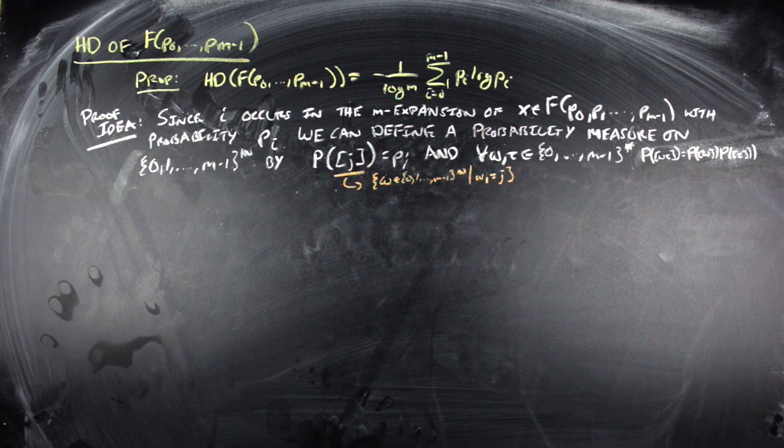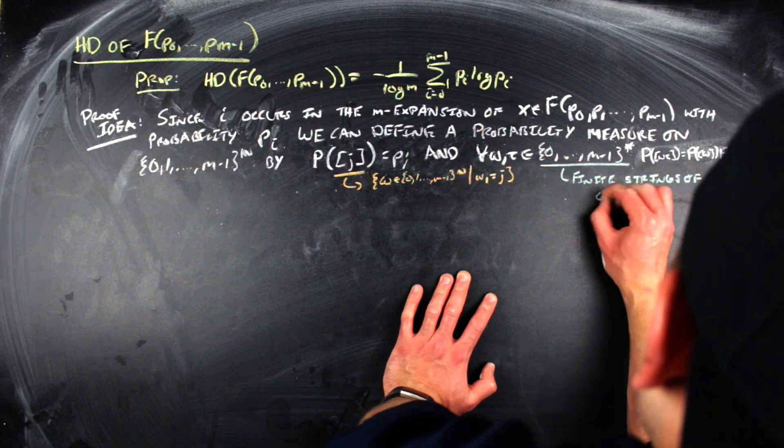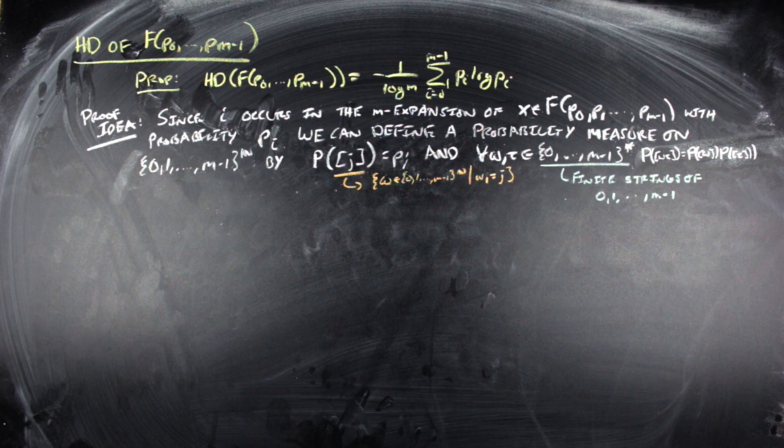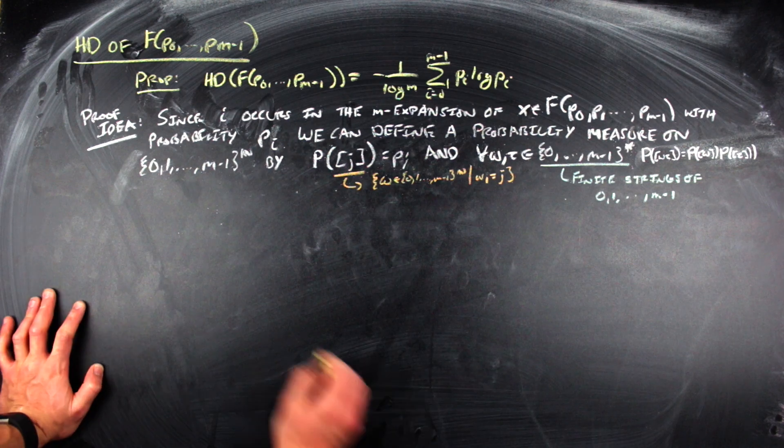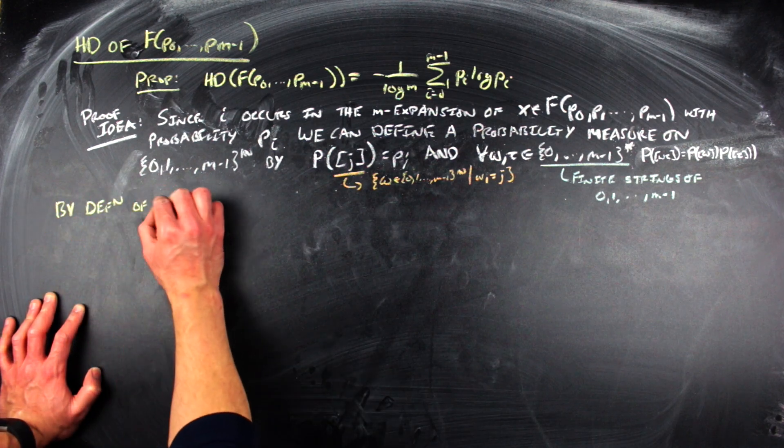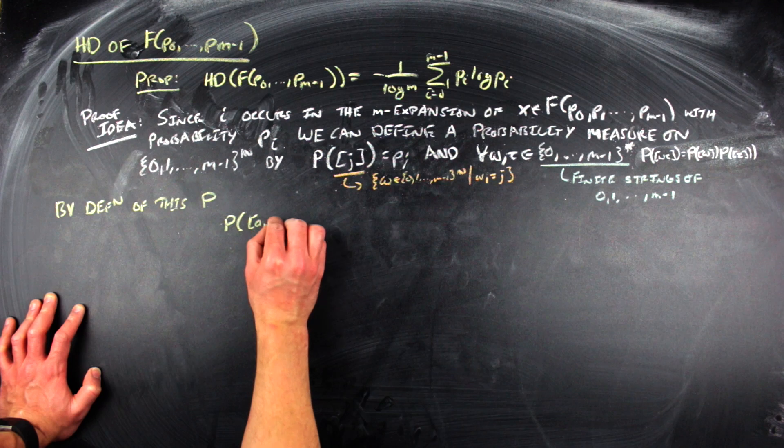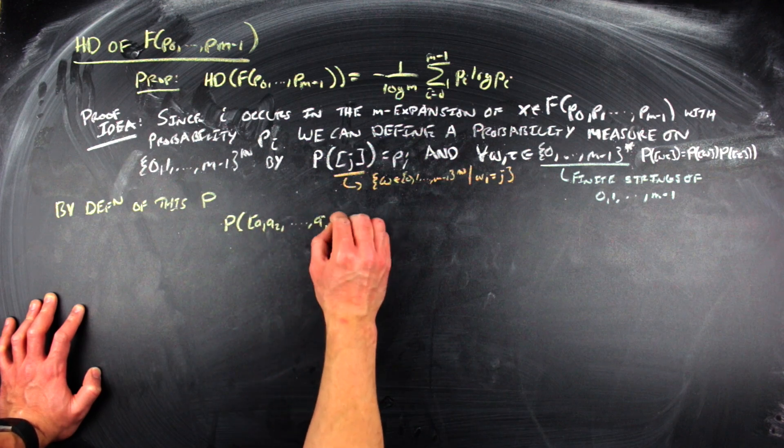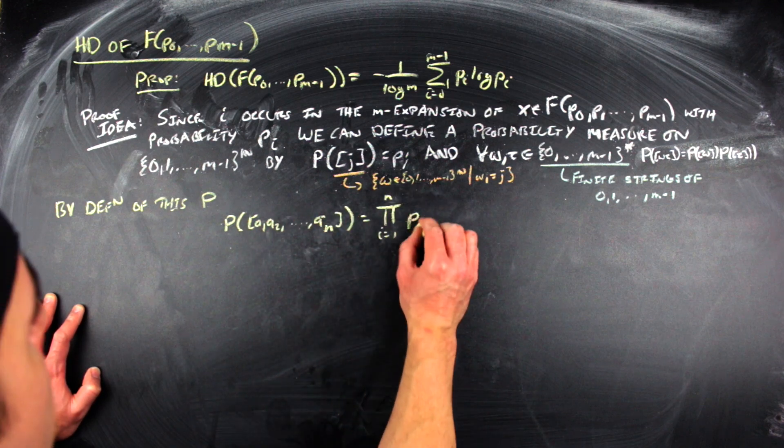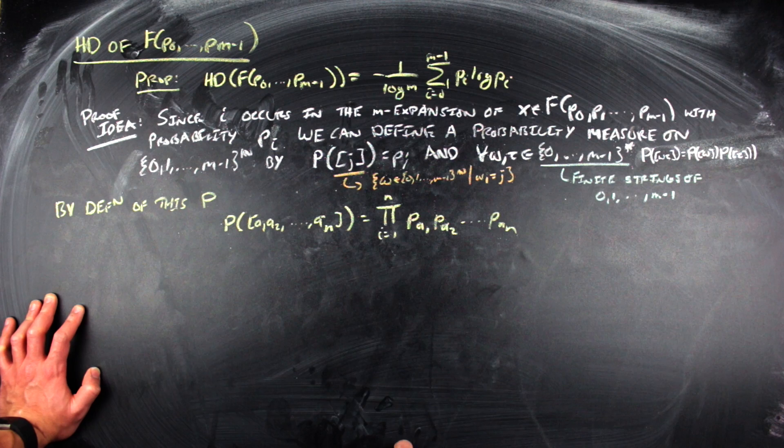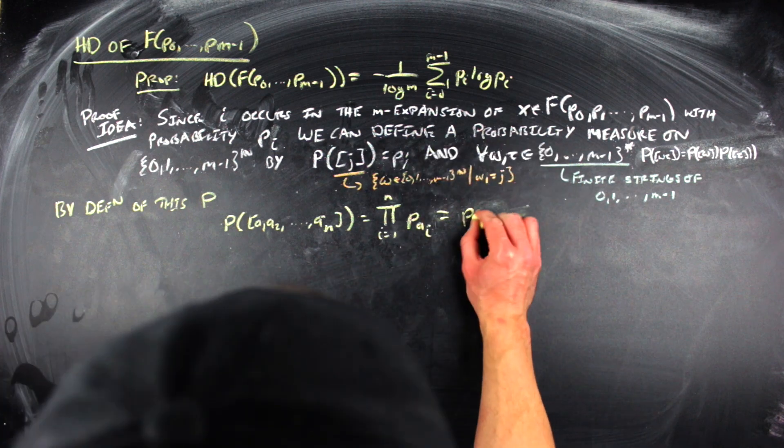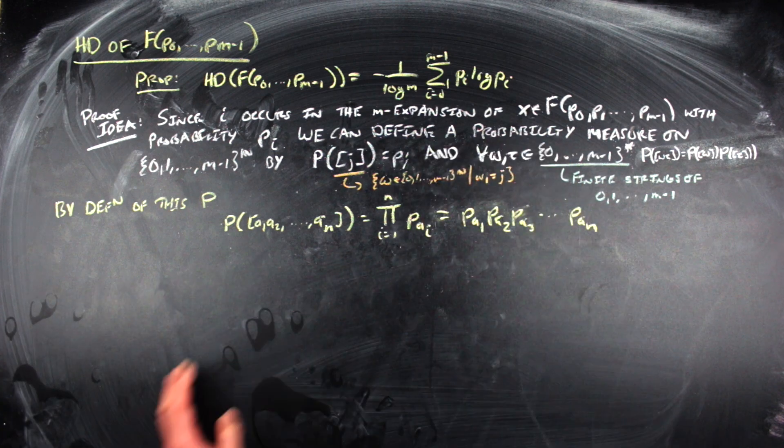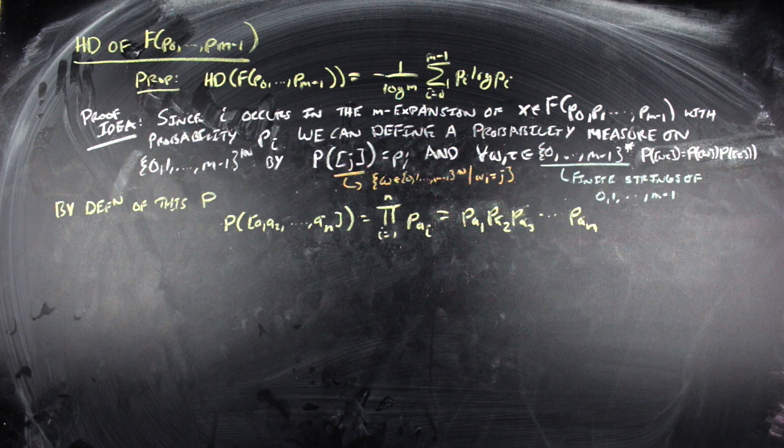Then, by definition of your probability P, P of the set of x's within 0, 1 that start in the expansion with A1, A2, A3 up to AN is going to be the product from I equals one to N of P sub A sub I, which is equal to P sub A sub 1 times P sub A sub 2 times P sub A sub 3 all the way up to P sub A sub N.